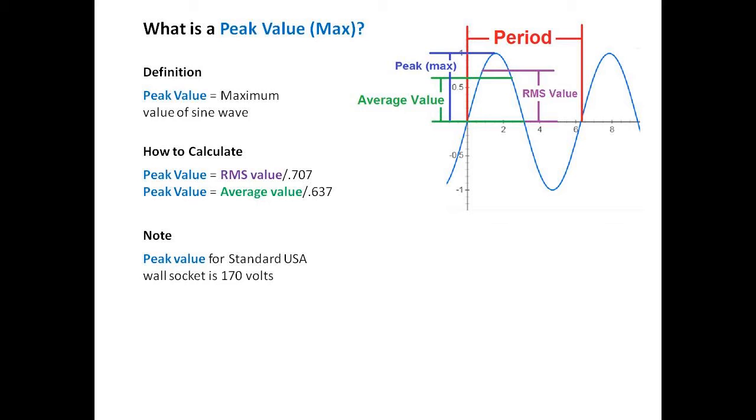Now I'd like to note that the peak value for a standard USA wall socket is 170 volts. Not to confuse you guys too much, but I know you guys are thinking, the USA wall socket is 120 volts. That's 120 volts RMS, which will be our next topic.